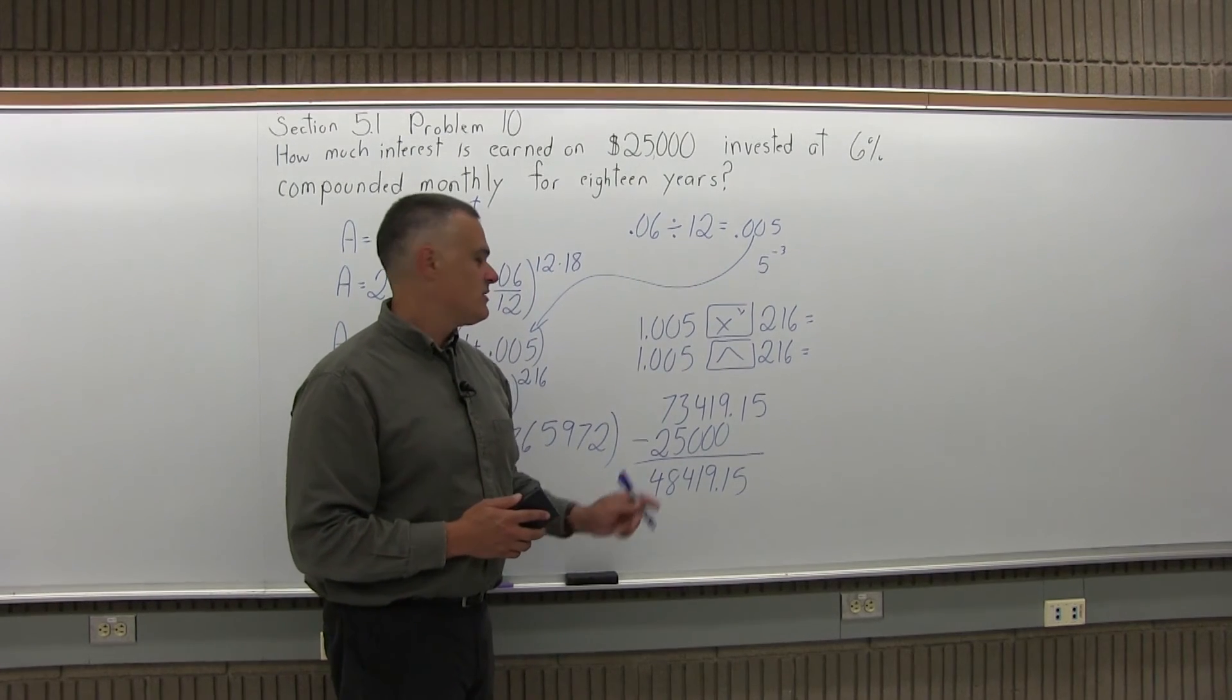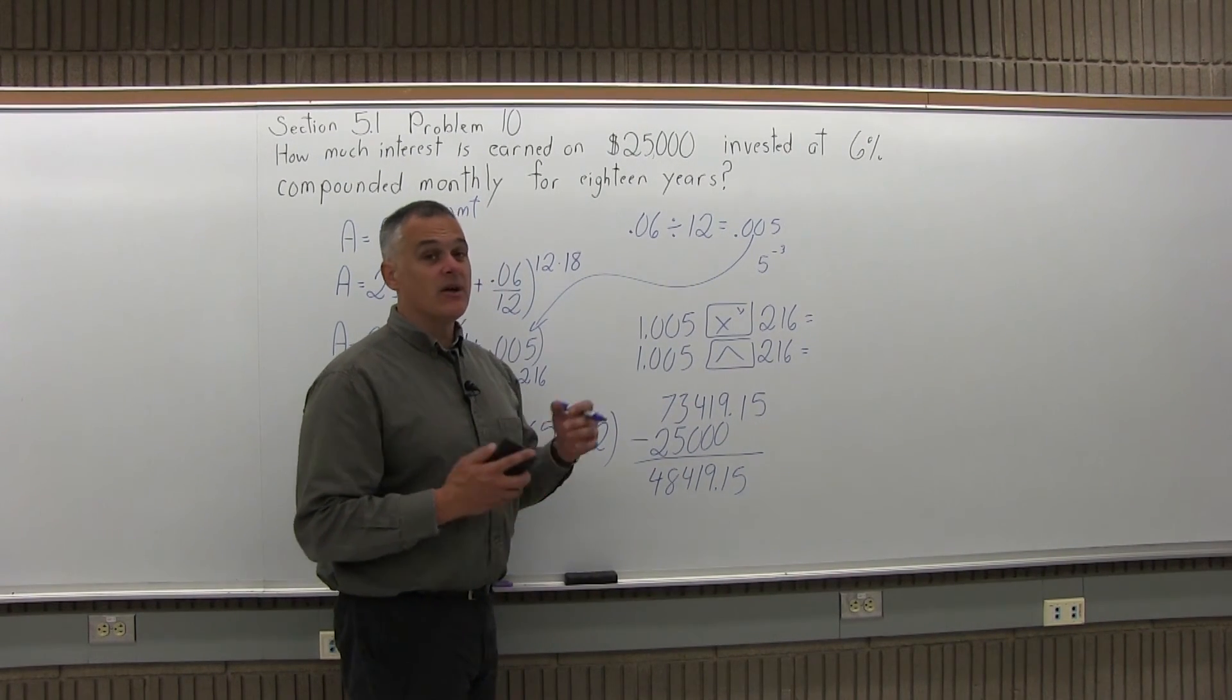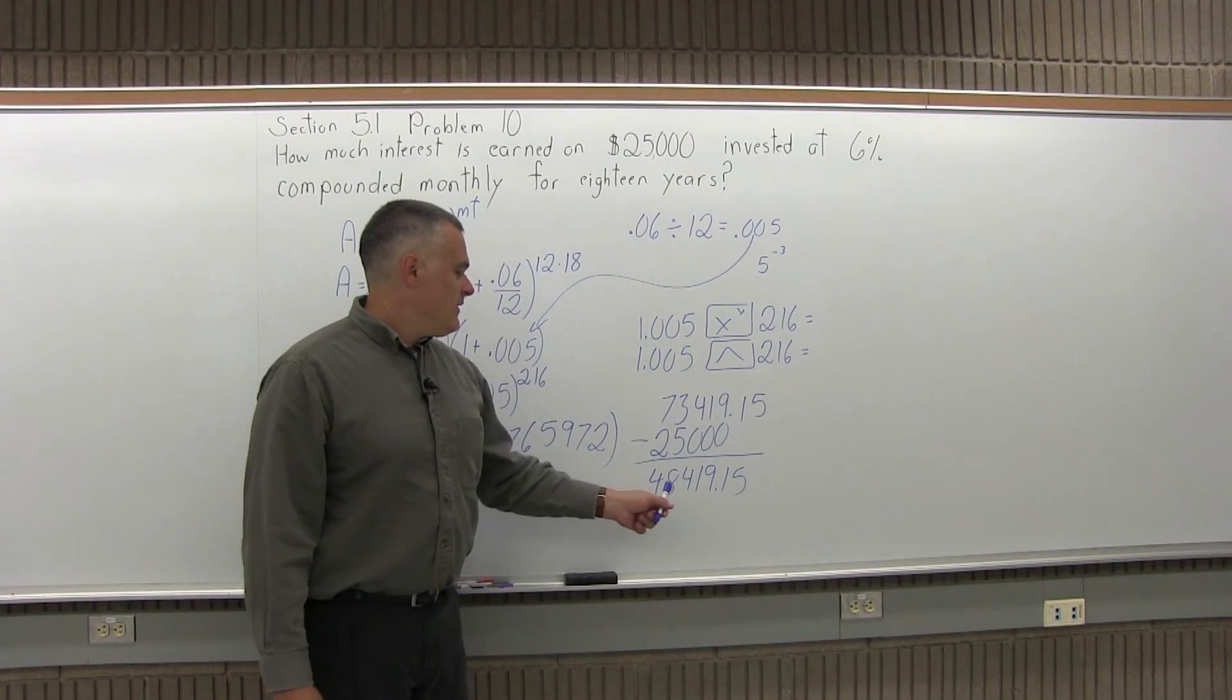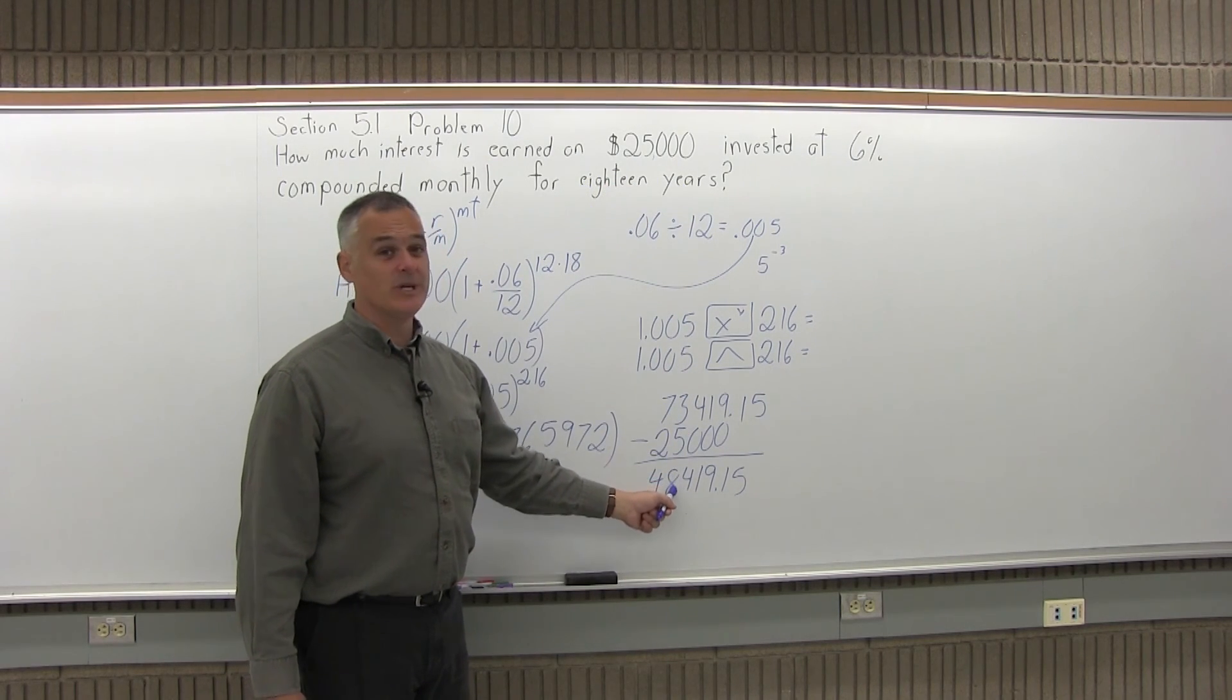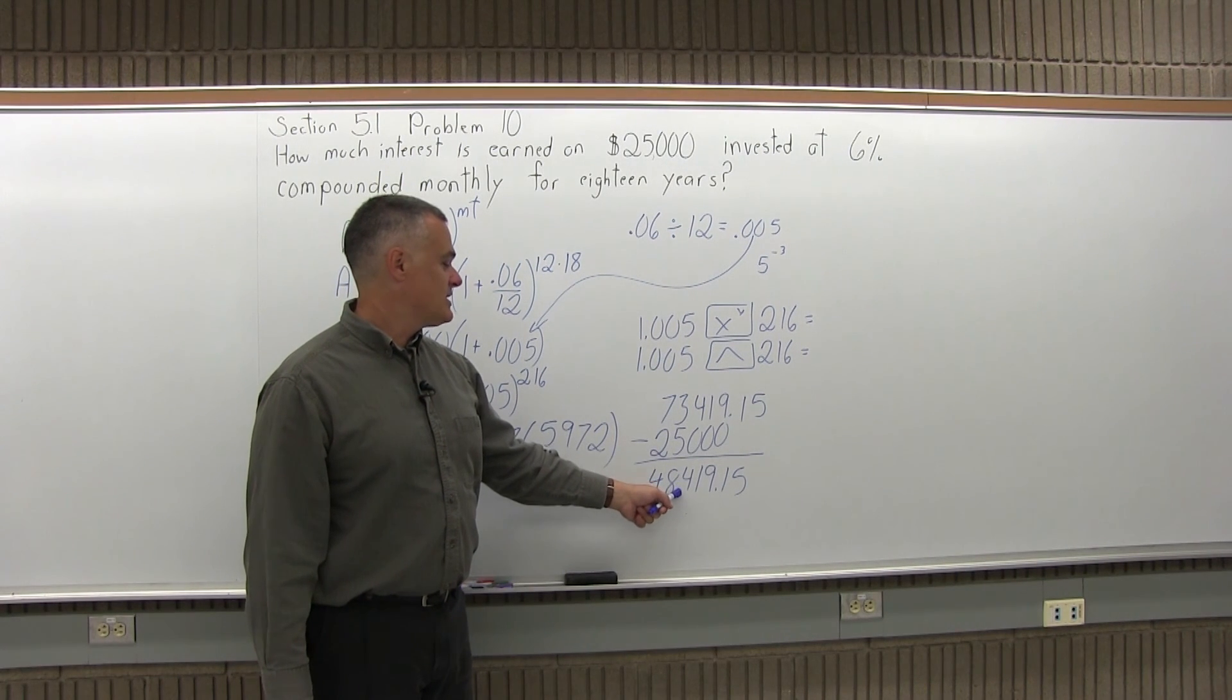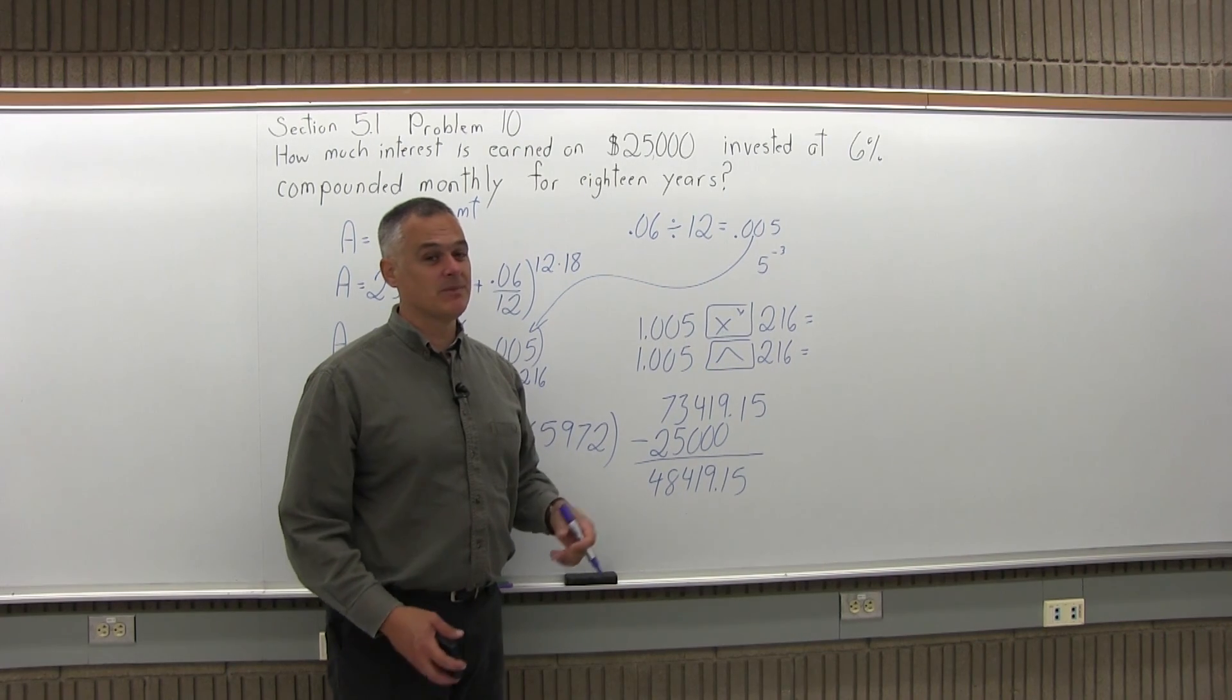That's the interest that you earned, plus the $25,000 that you put in gave you a total of $73,000. Now to compare this to problem number 9, the previous one, the amount of interest that you earned at 6% simple interest was only $27,000. So when you go to compound interest, instead of $27,000 you're making $48,000 of interest. That compounding makes a big, big difference.